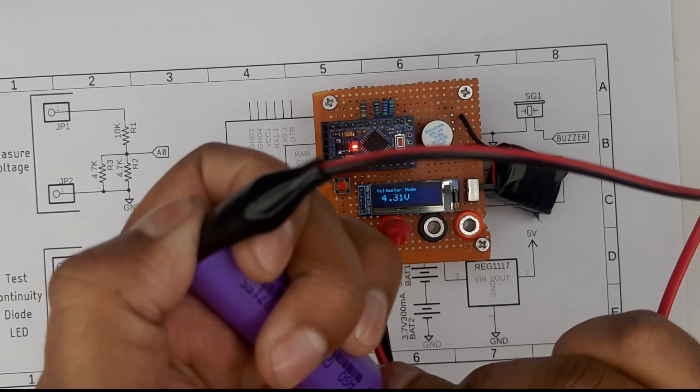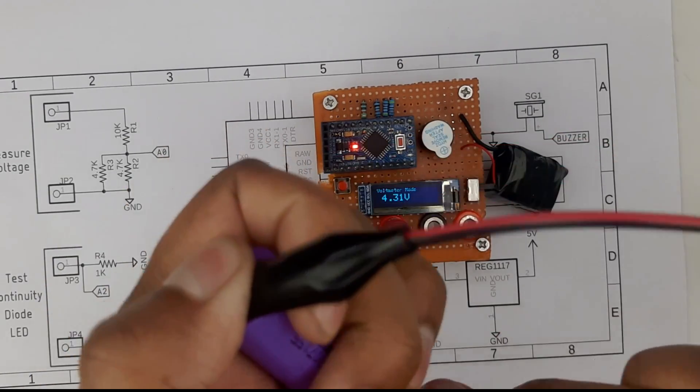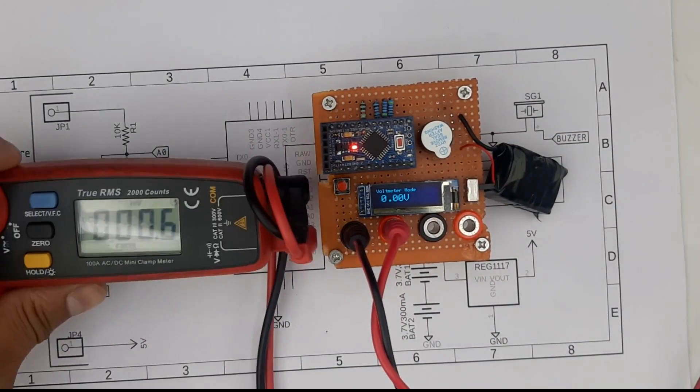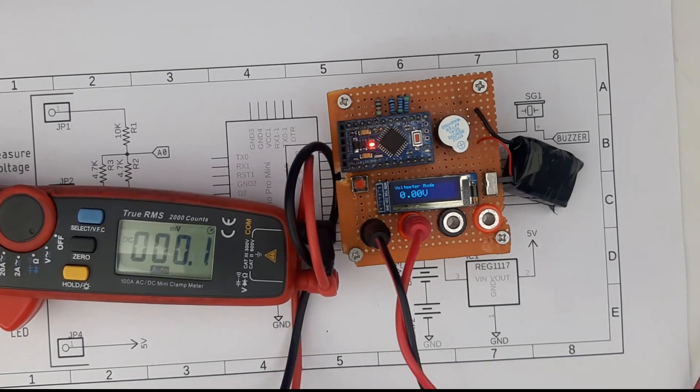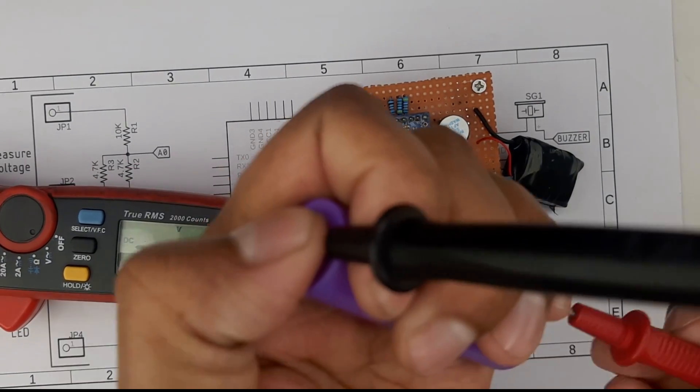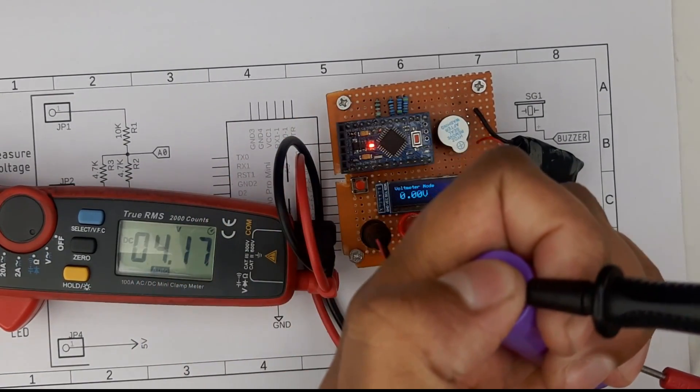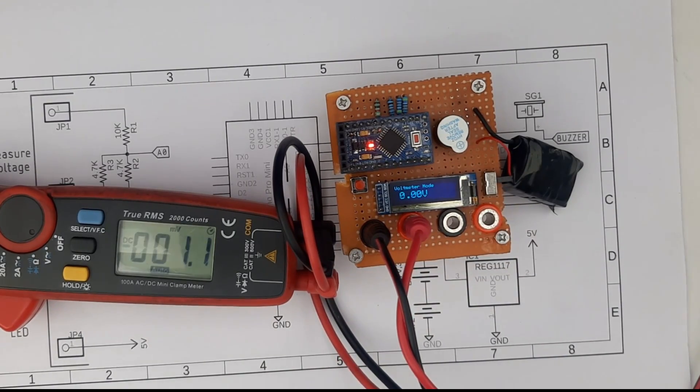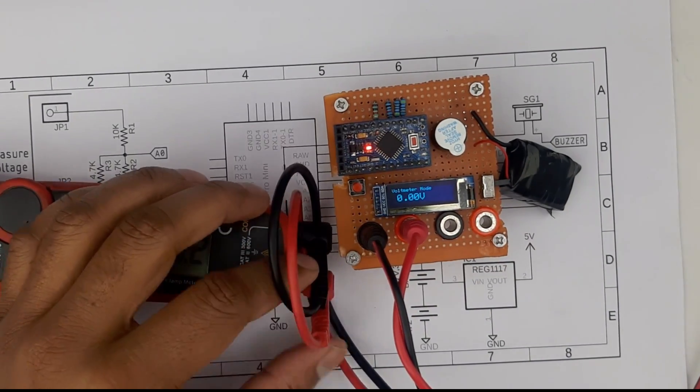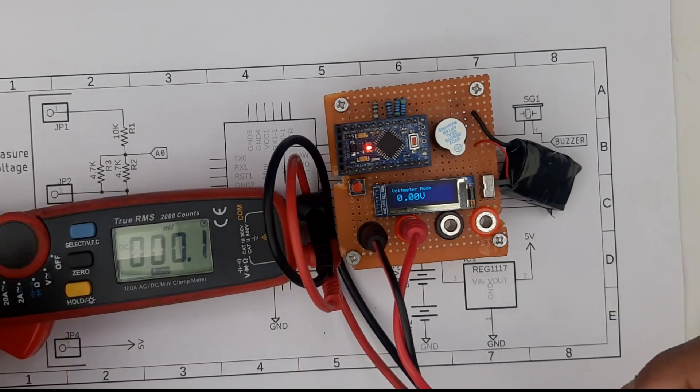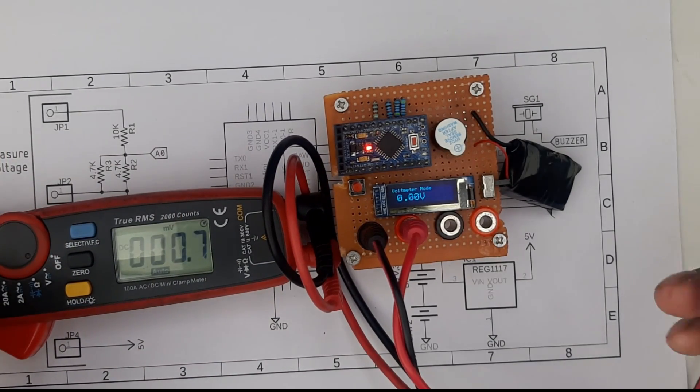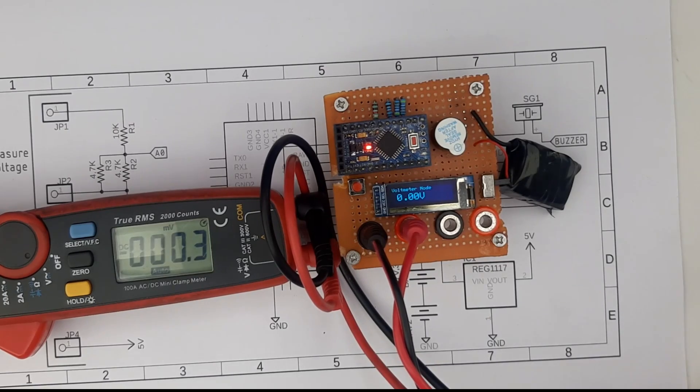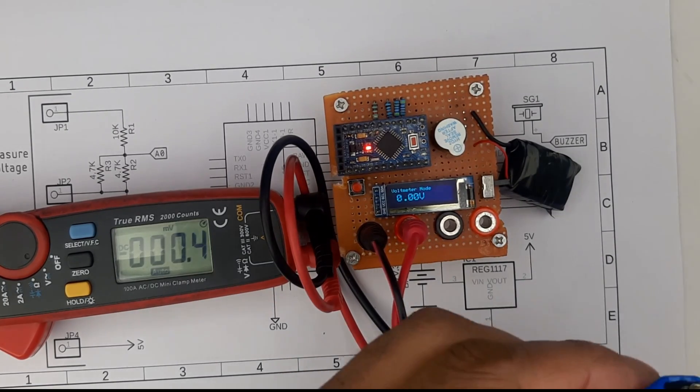You can see that it's 4.31 volts. For reference I have a good quality multimeter over here so let's see what it shows. It's 4.1. It's not the most accurate one because I have not calibrated it. By calibrating it you can go pretty accurate with this multimeter.